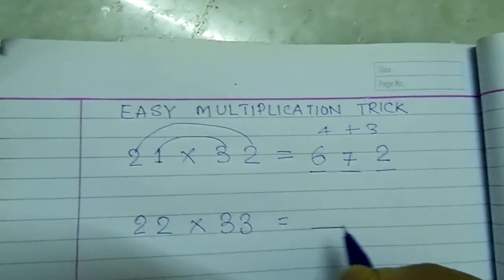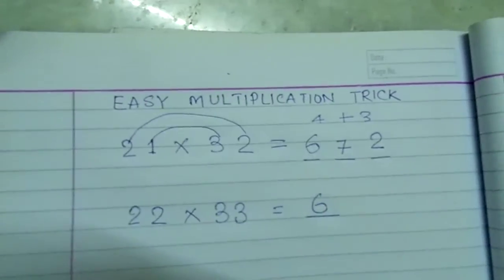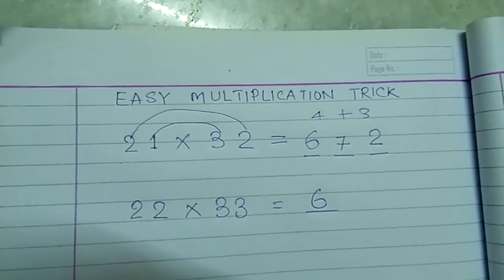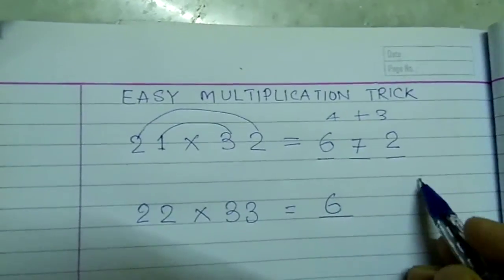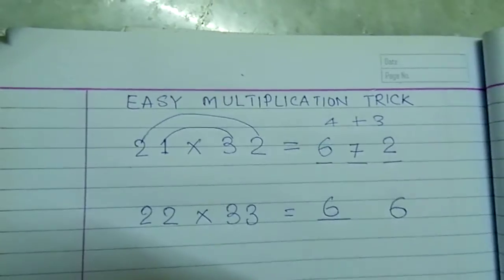To get the first number, multiply the first number of these two numbers and we get the first digit of the number. To get the last number, multiply the last number of these two and write it down. That is also 6.